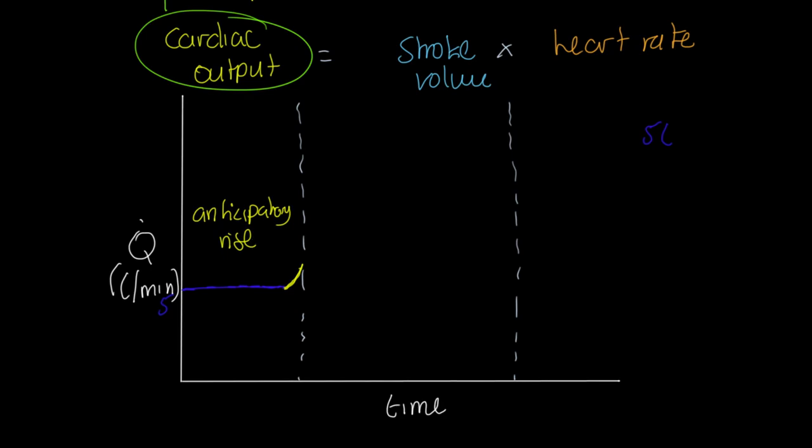This line shows the cardiac response to a 20-minute training run for an untrained athlete. Notice that it takes quite a long time for their cardiac output to reach exercising level—it happens gradually. Also, after exercise finishes, it takes quite a long time for their cardiac output to return to resting levels.